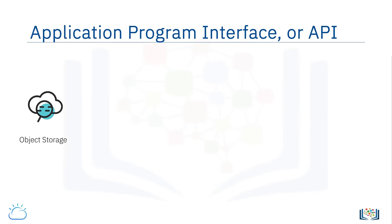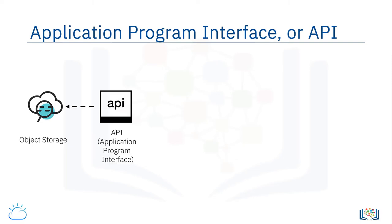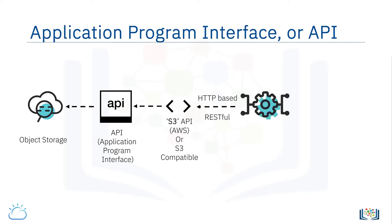Object storage does not need to be attached to a compute node for you to access it. Rather, you access object storage through an application program interface, or API. The most common API for object storage is called the S3 API, which is a standard based on the S3 object storage offered by AWS. Many providers offer APIs to their object storage which are S3 compatible, which is useful because it means developers can write code that is able to access multiple vendors' object storage.